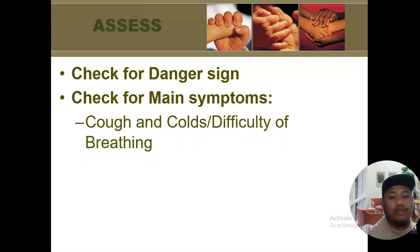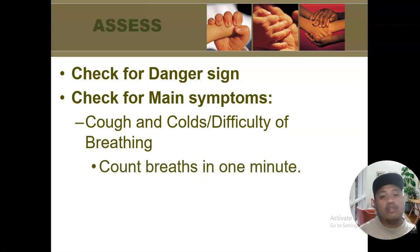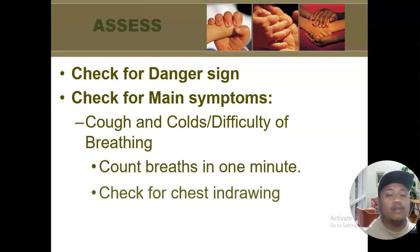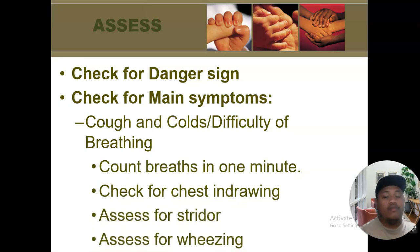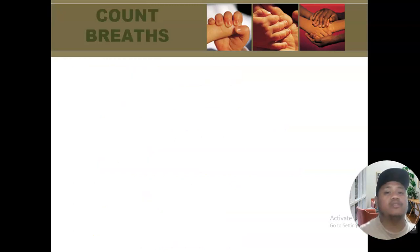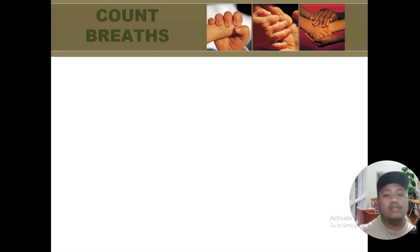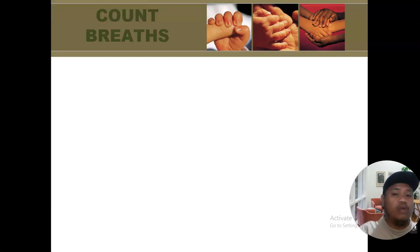If the child presents with cough or difficulty of breathing, we have to check for the following: check for fast breathing by counting the breaths for one full minute; check for the presence of chest indrawing; listen for stridor; and listen for the presence of wheezing. For counting breaths, one full breath is a combination of one expiration and one inspiration, equivalent to one breathing cycle.